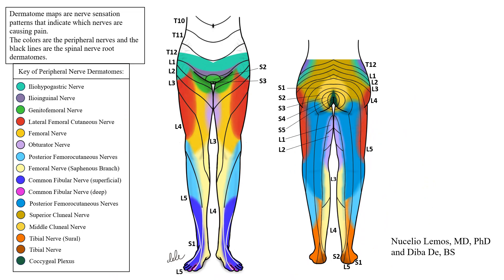Dermatome maps are nerve sensation patterns that are well described and mapped out in the human body. These diagrams indicate whether your pain is in a particular nerve pattern. In order to interpret your pain correctly, find whether your pain matches the colors, which are the peripheral nerves, or the black lines, which are the spinal nerve roots.